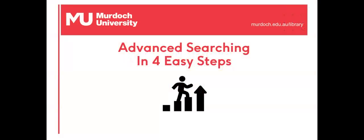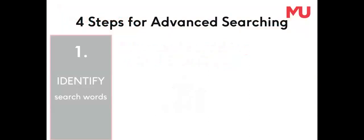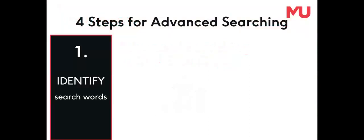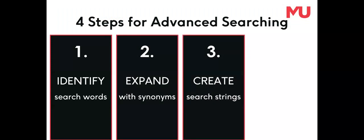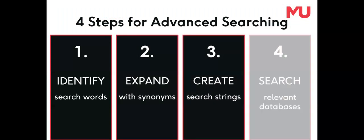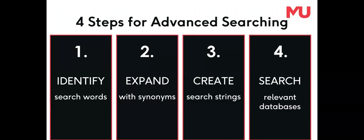Creating an advanced search strategy for comprehensive research comprises four steps: identify search words, expand these with synonyms, create search strings, then search relevant databases.